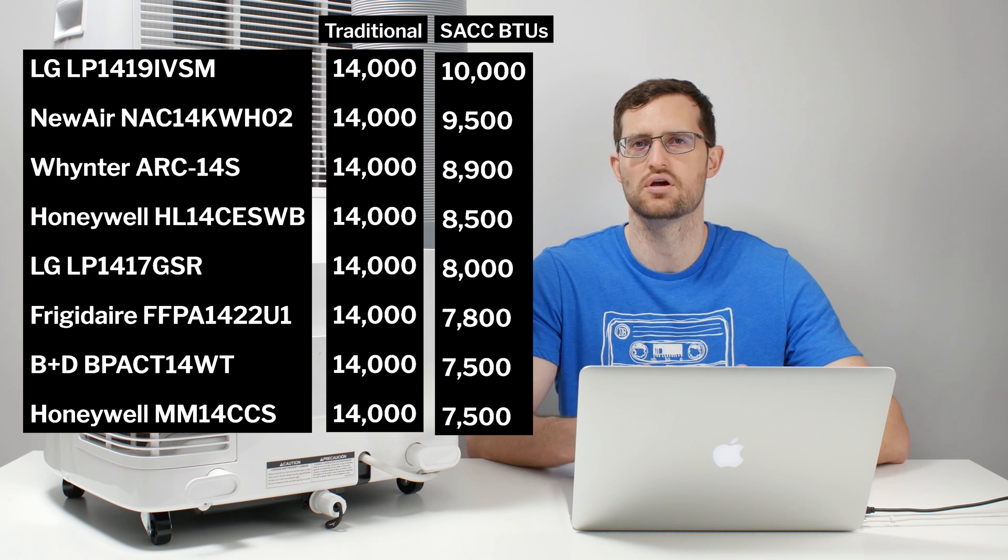However what we see here is we see a 14,000 BTU dual hose unit in the Whynter here that is at a lower capacity, at a lower seasonally adjusted cooling capacity than multiple single hose units. So what that suggests is that even though the Whynter has this major advantage with its second hose, there are several disadvantages that it has as well which pull it down to 8,900 BTUs compared to the higher BTUs for those top rated single hose units.